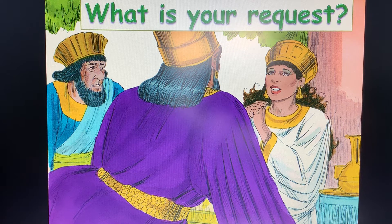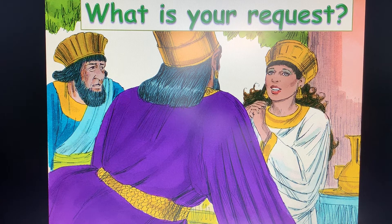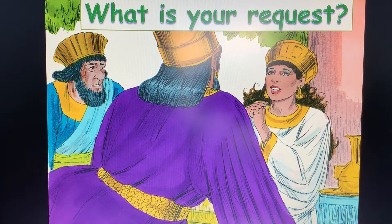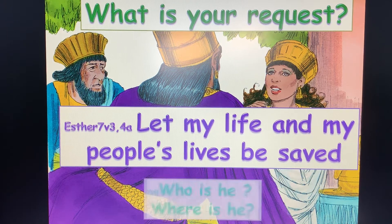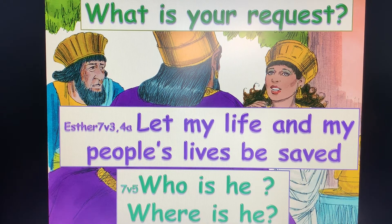Let me read what Esther said in chapter 7, verses 3 and 4: 'Then Esther the queen answered and said, if I have found favour in thy sight, O king, and if it please the king, let my life be given me at my petition and my people at my request, for we are sold, I and my people, to be destroyed, to be slain, to perish.' In other words, Esther was asking the king: let my life and my people's lives be saved, for we have been sold to be destroyed.